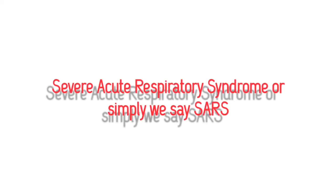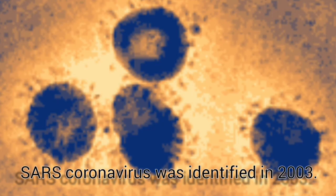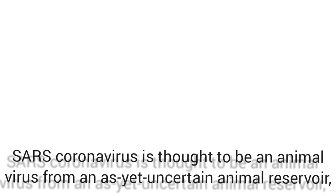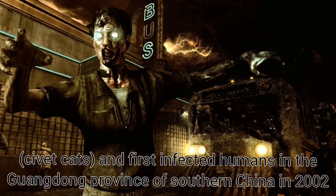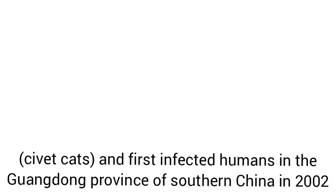First, let's get information on SARS-CoV-1 — severe acute respiratory syndrome, or simply SARS. SARS coronavirus was identified in 2003. It is thought to be an animal virus from an as-yet uncertain animal reservoir, perhaps bats, that spread to other animals such as civet cats, and first infected humans in the Guangdong province of southern China in 2002.